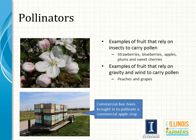With strawberries, blueberries, apples, plums, and sweet cherries, insects carry the pollen from flower to flower — insects are the pollinator for these crops. Some fruits, such as grapes and peaches, rely on gravity or wind currents to carry pollen from their anthers to the pistil. Heavy rains during bloom can interfere with pollen distribution or insect activity. Seed formation will be poor if pollination is inadequate, and seed formation is essential for the growth and development of most fruits.